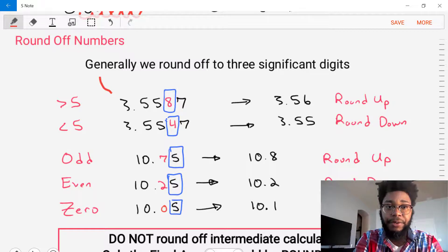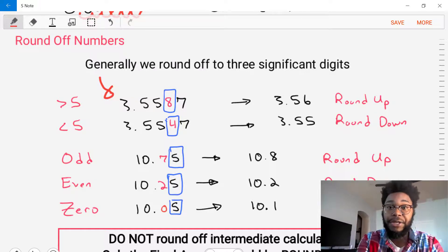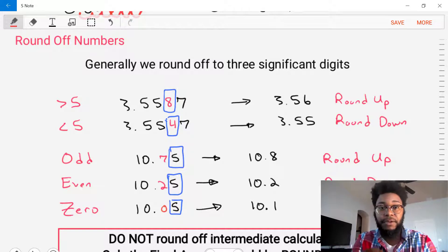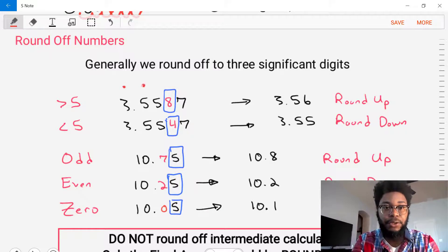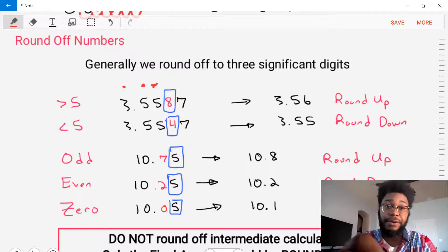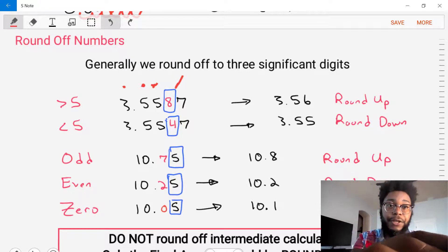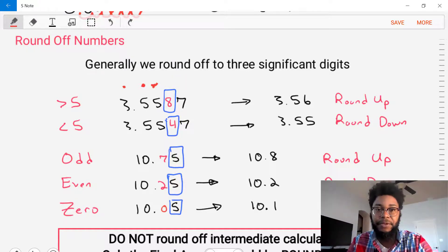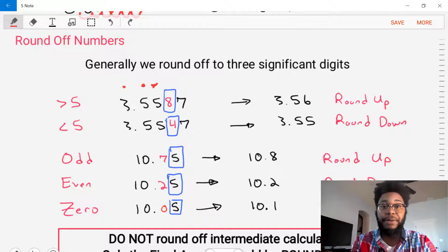We'll start with this example number of 3.5587. We want to round this number to three significant digits. So let's count out one, two, three significant digits. So our three significant digits are 3.55. Now if we look at the fourth digit, the one here that's boxed in blue, our fourth digit is the value of 8. And if it's 8, which is a number that's greater than 5, then we're going to round up. So when we round up, we're going to find our value is 3.56 because we're rounding up on that fourth term.